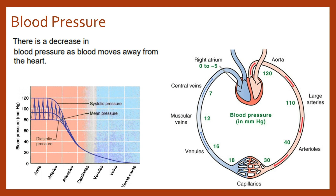Blood pressure will then gradually drop as it moves away from the heart, until it's at its lowest as it returns via the vena cava into the right atrium. We'll discuss the details of the different types of blood vessels and look at blood pressure in our subsequent videos.